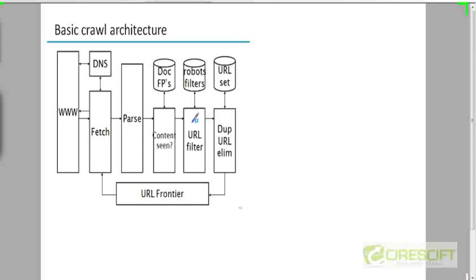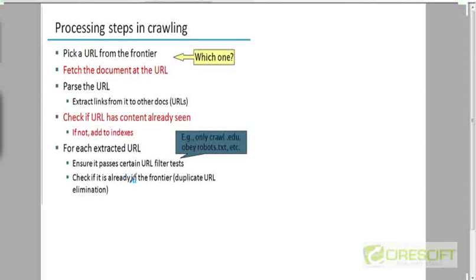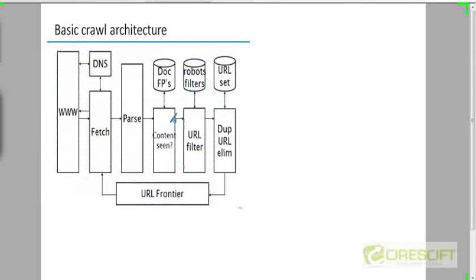Once you ensure that your URL passes those tests, you then check that your URL does not already exist in the URL frontier. There could be multiple URLs from the same page, so you do this for each URL on the page you are parsing. You perform duplicate URL elimination based on a set of URLs you know you have already seen, and then add the new URL to the URL frontier.